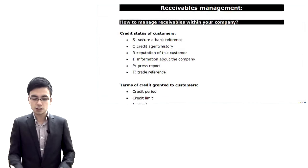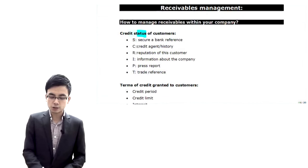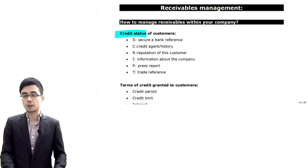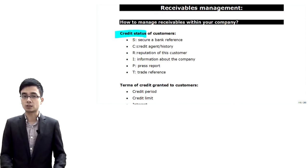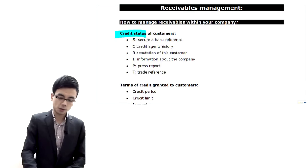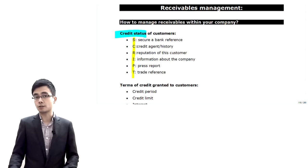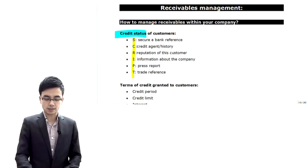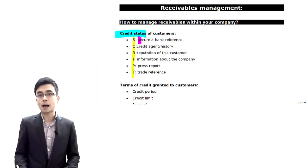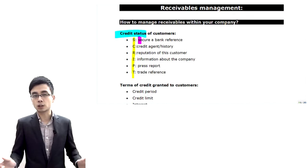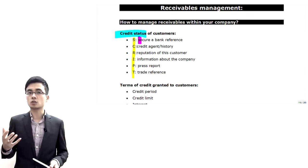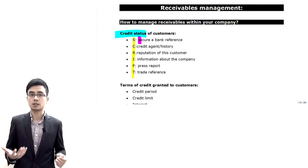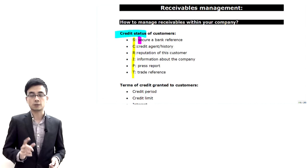The first thing we do is look at the credit status of the customer — whether John is creditworthy. We use the mnemonic SCRIPT. The first S stands for securing a bank reference — with the client's permission, we go to the bank to see whether the client is defaulting on payments.